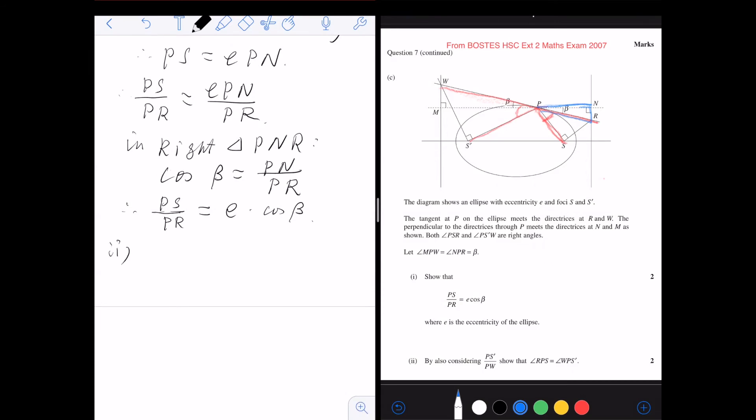And then second question. Second question asks you to prove PS dash over PW. Let's see, PS dash over PW is PS dash over PW. We're using this ratio to show this angle equals to this angle now. So let's continue.